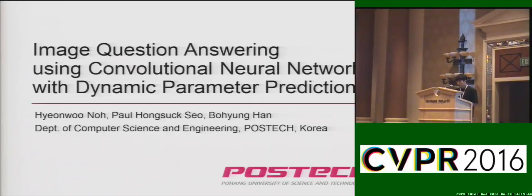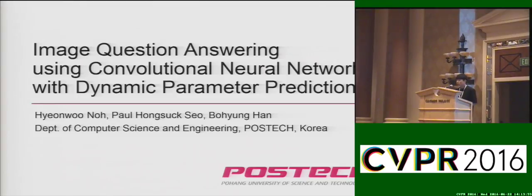Hello. Today I am going to present an image question answering method based on convolutional neural network with dynamic parameter layer, whose weights are determined adaptively by a given question. This is joint work with Paul Hongsuk-Seop and my advisor Bo Young-Han.